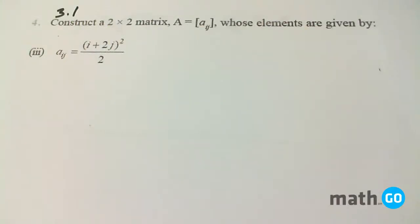Exercise 3.1, question number 4. It says construct a 2 by 2 matrix A such that Aij is (i + 2j)² divided by 2.